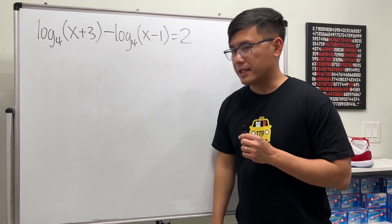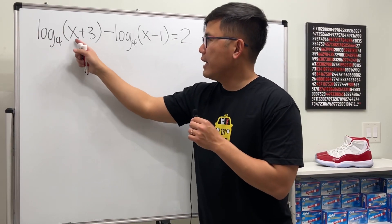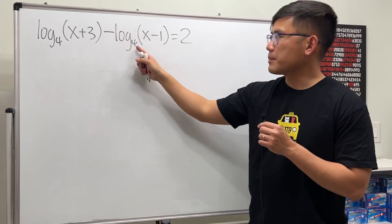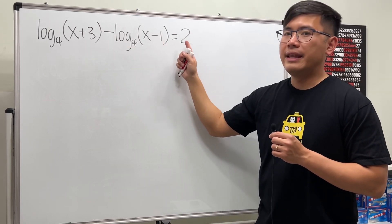Let's solve this logarithmic equation. We have log base 4 of (x+3) minus log base 4 of (x-1), and that's equal to 2.